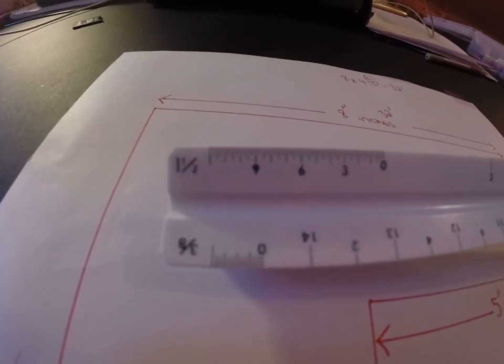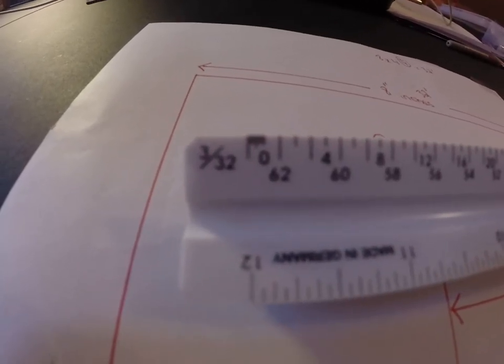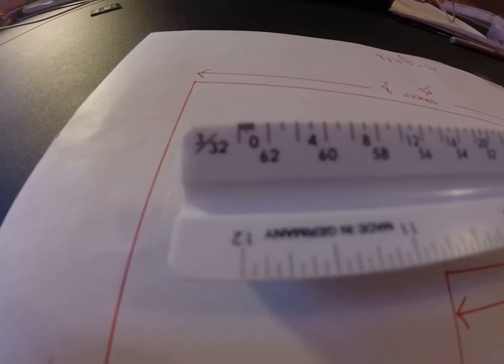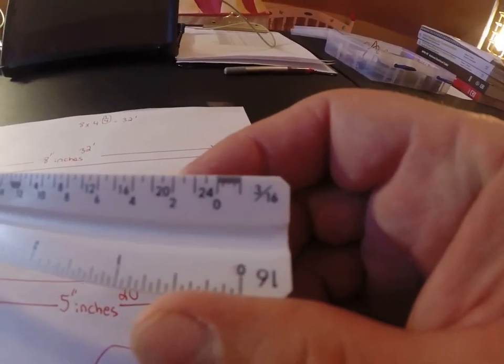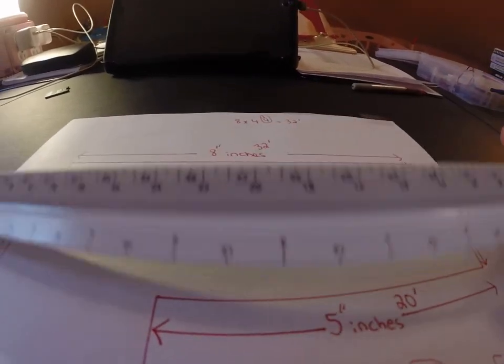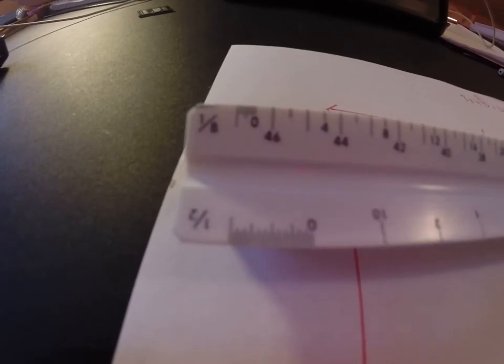If I flip this around, three inches equals a foot, inch and a half equals a foot, none of those. Three thirty seconds equals a foot, not that. Three sixteenths equals a foot, no, we're getting closer though.